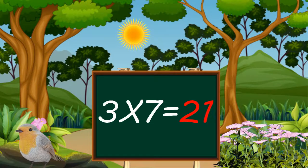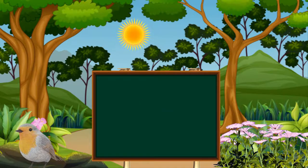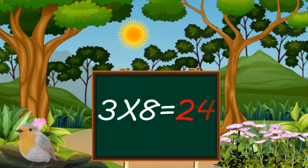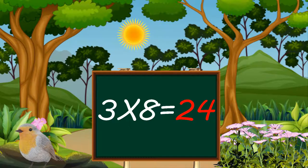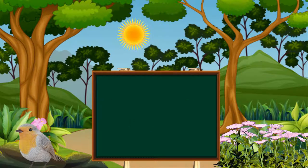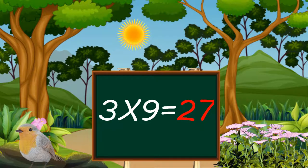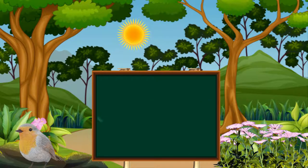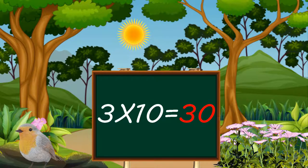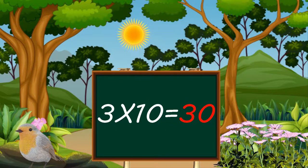Three sevens are twenty-one. Three eights are twenty-four. Three nines are twenty-seven. Three tens are thirty.